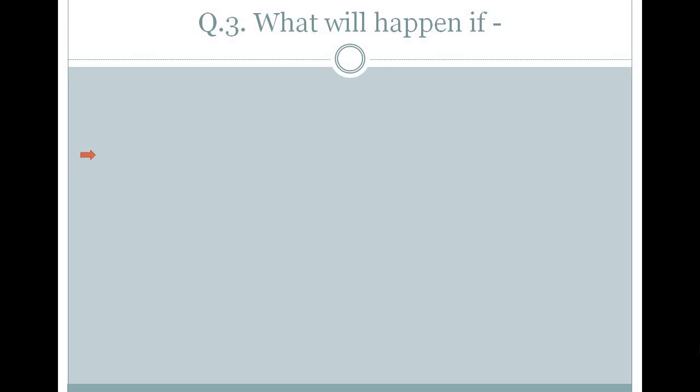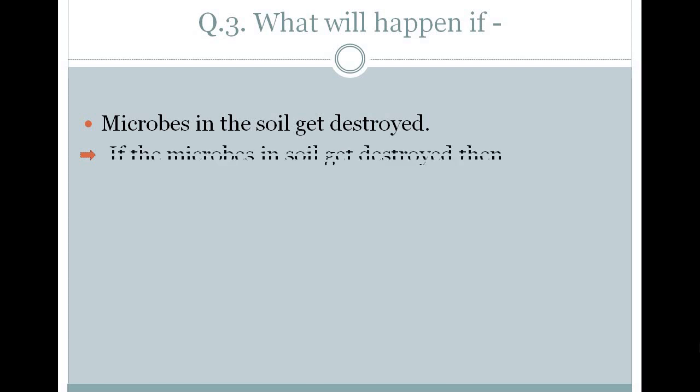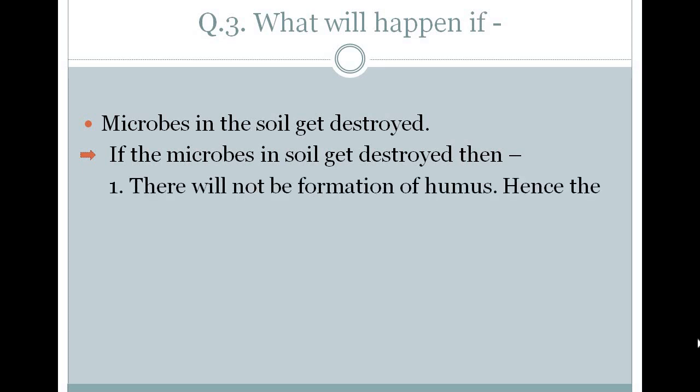Question number 3 is: what will happen if? The first question asked is: microbes in the soil get destroyed. What will happen if the microbes in the soil get lost or destroyed? First of all, you have to know that microbes are very important. If those microbes in the soil get destroyed, then there will not be a formation of humus.